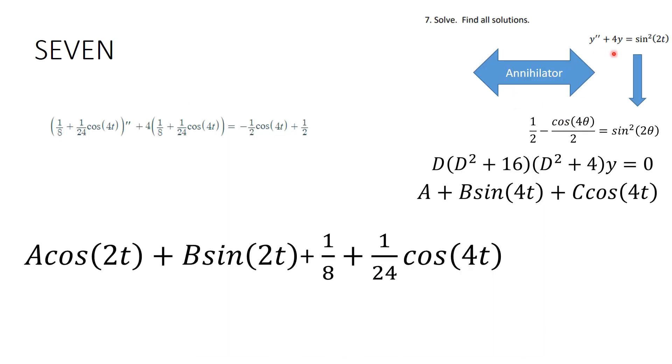Number seven, you were to find all solutions to this problem. Now this is an annihilator problem, or it's a variation of parameters problem. It would be easier, I think, to do this annihilator, but you don't know how to annihilate sine squared of 2x, so you have to use a trig identity, and so this is what you end up annihilating.